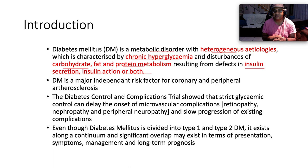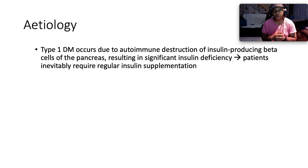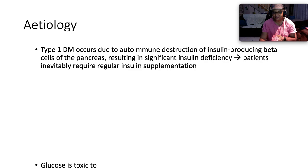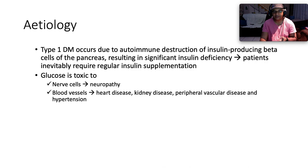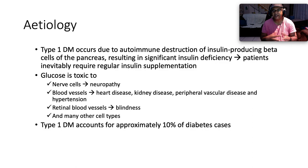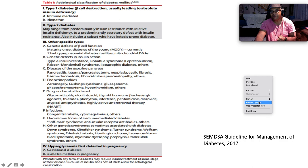Even though diabetes mellitus is divided into type 1 and type 2, it exists along a continuum with significant overlap in presentation, management, and prognosis. Focusing on type 1 diabetes: it occurs due to autoimmune destruction of the insulin-producing beta cells of the pancreas, resulting in significant insulin deficiency. Patients inevitably require regular insulin supplementation for survival. Glucose toxicity causes neuropathy, heart disease, kidney disease, peripheral vascular disease, hypertension, retinopathy, and is manifested through advanced glycation end products like sorbitol. Type 1 diabetes accounts for approximately 10% of diabetes cases.